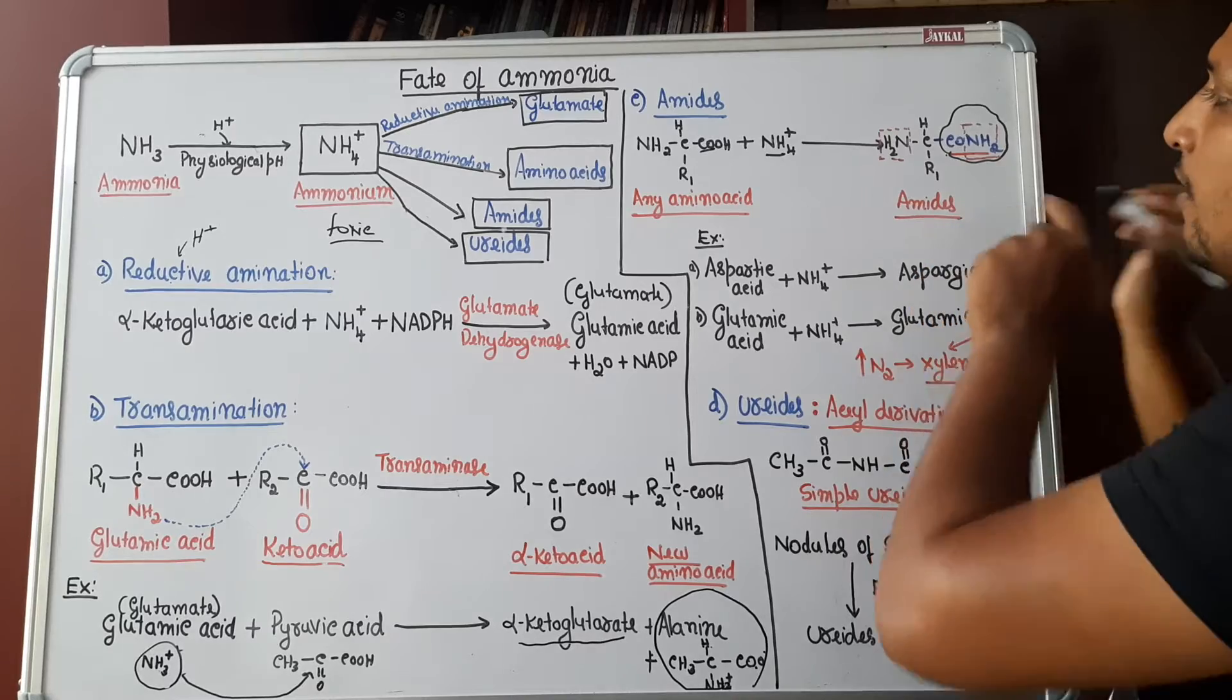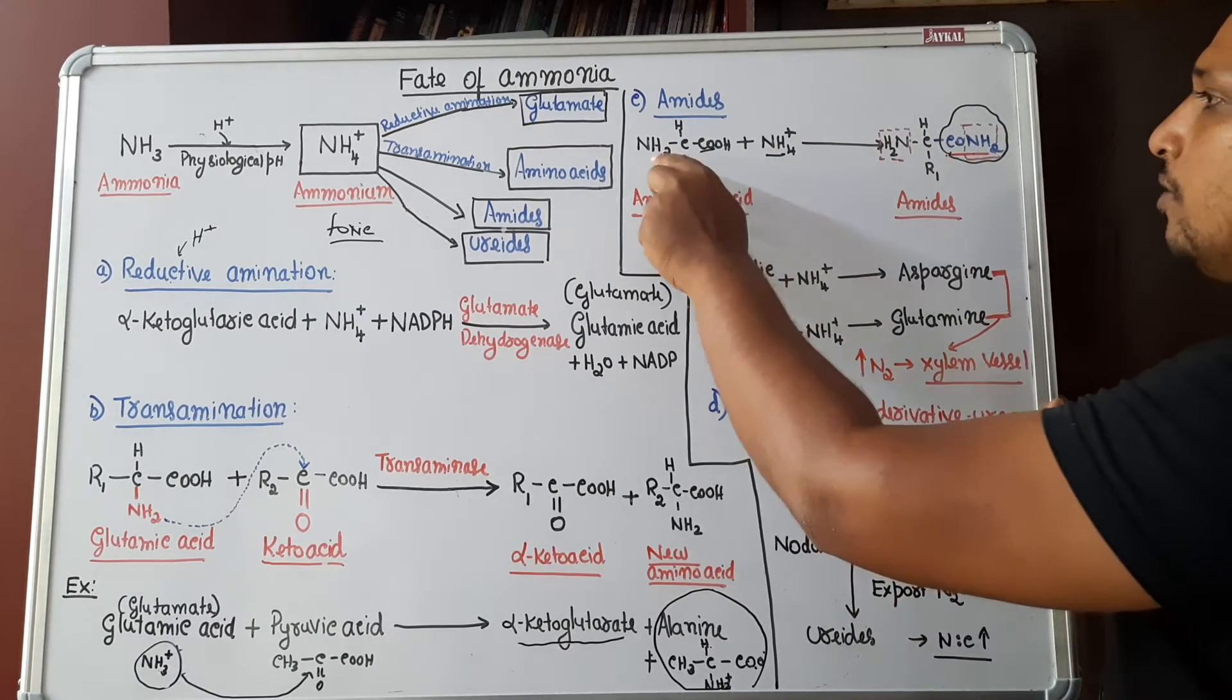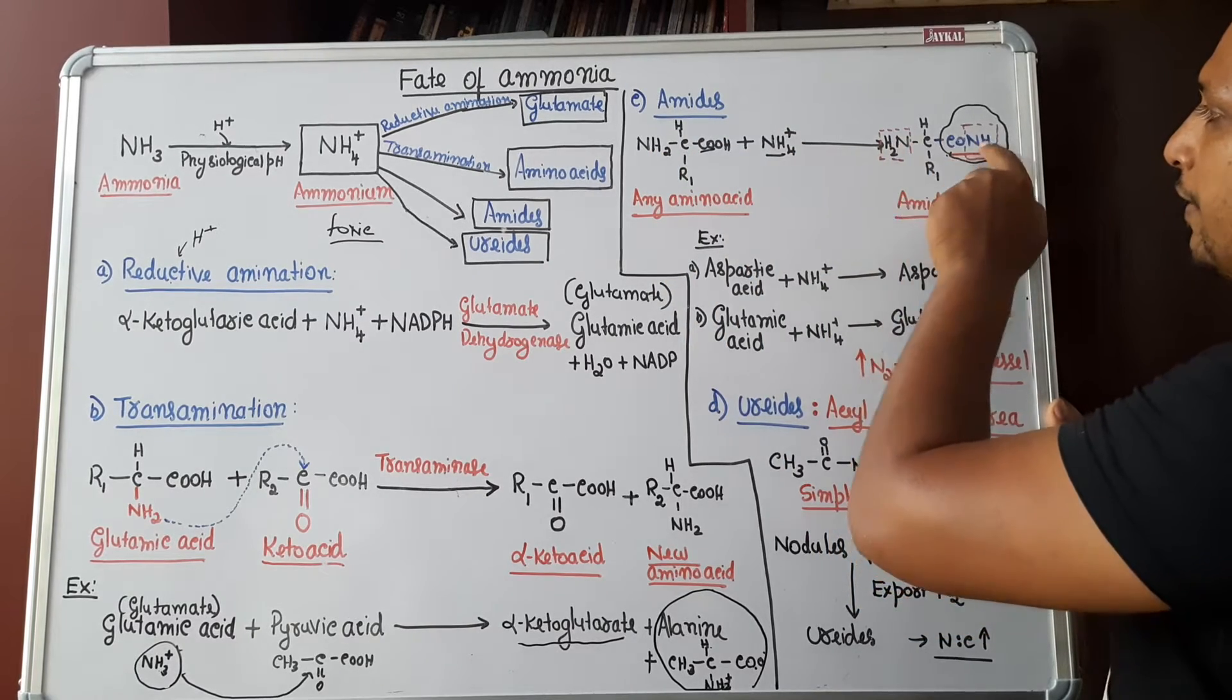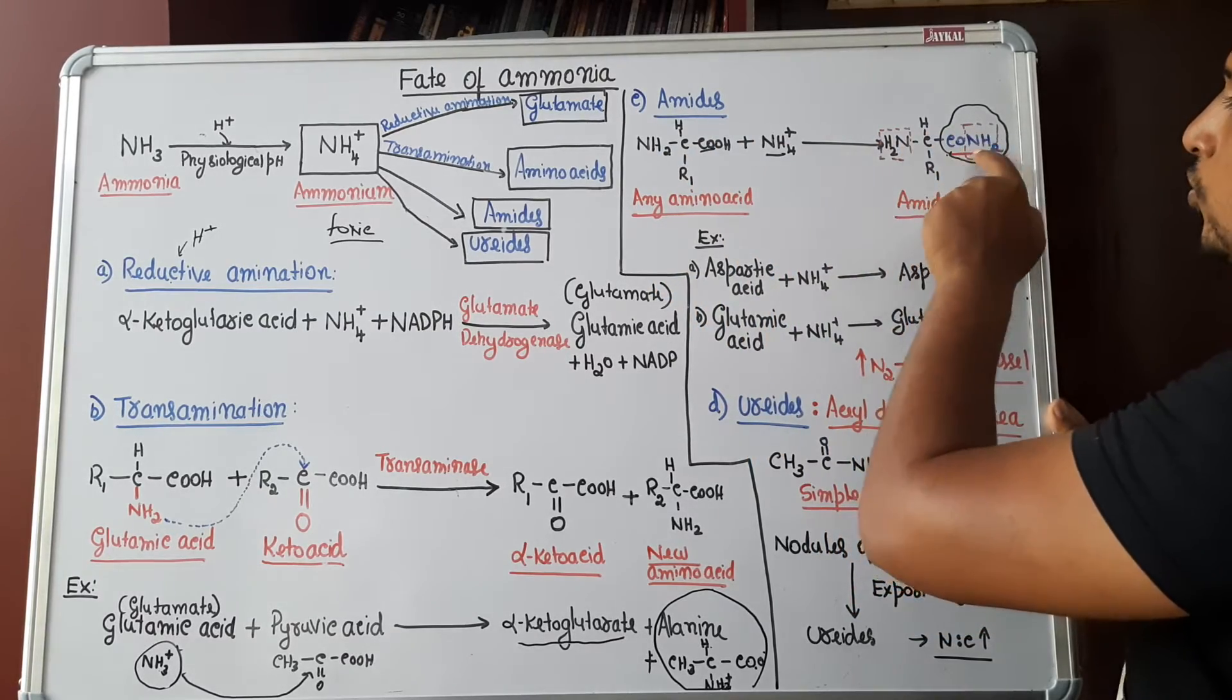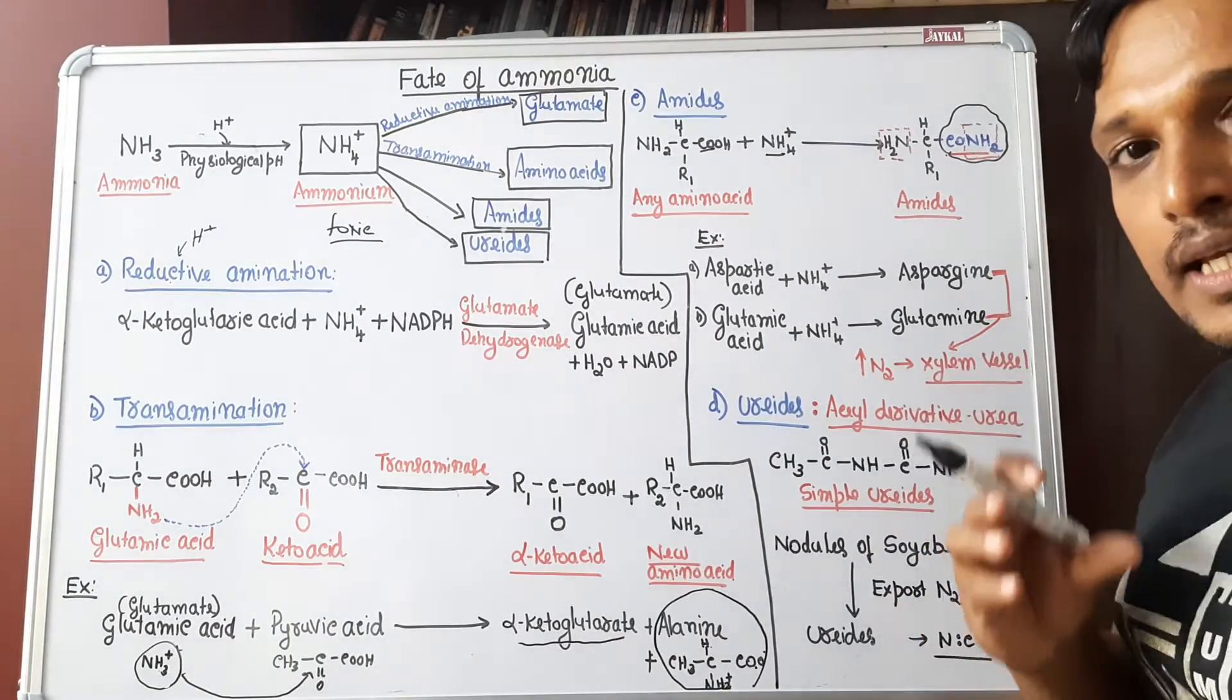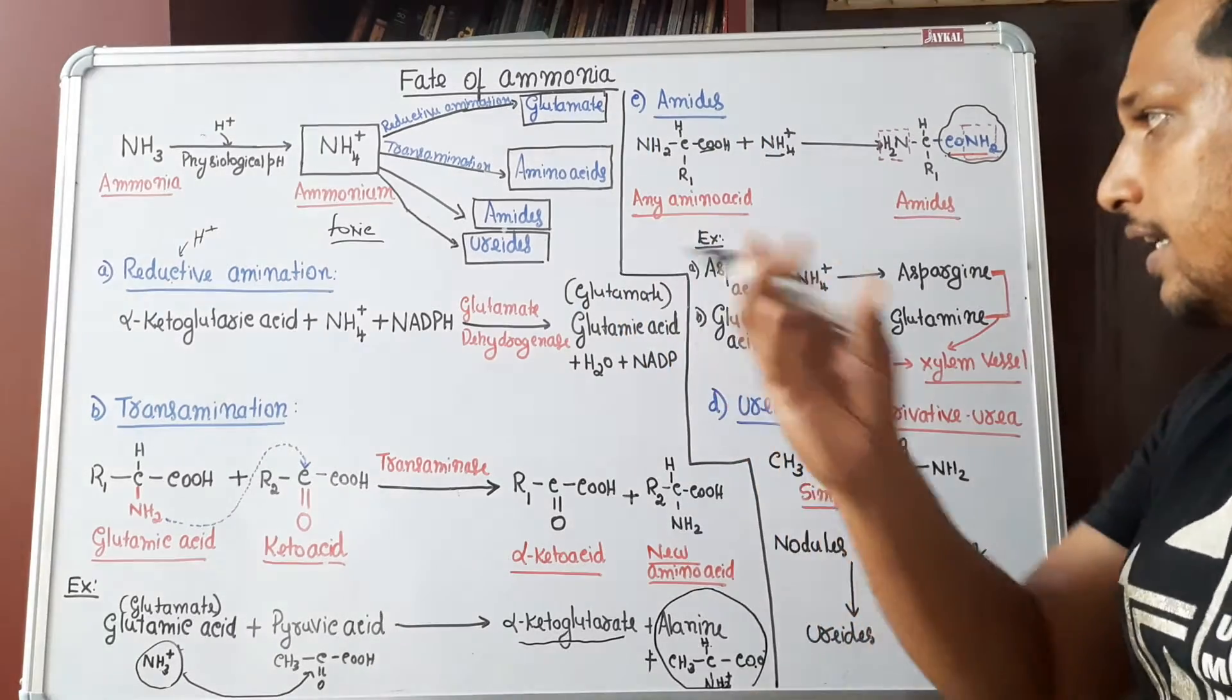This is how amide is formed. What is the difference between a normal amino acid and an amide? Normal amino acid will be having a less number of nitrogen whereas amides are having more nitrogen. Here you will find the amino acid is having only one N whereas amides are having two nitrogen groups. That is the benefit. The amides are having more nitrogen. Hence, when nitrogen is transported in the form of amide, more nitrogen can be transported. That is the benefit.